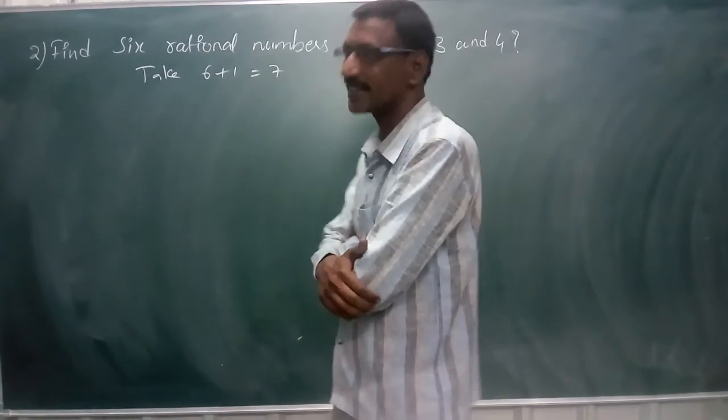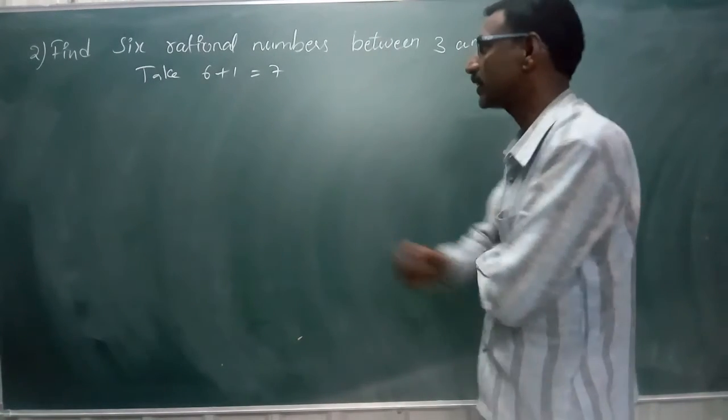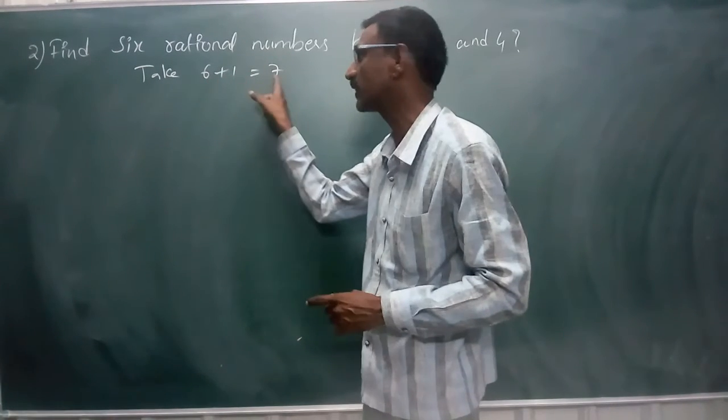So you are given to find 6 rational numbers between 3 and 4. That is the reason you take 6 plus 1, that is equal to 7.